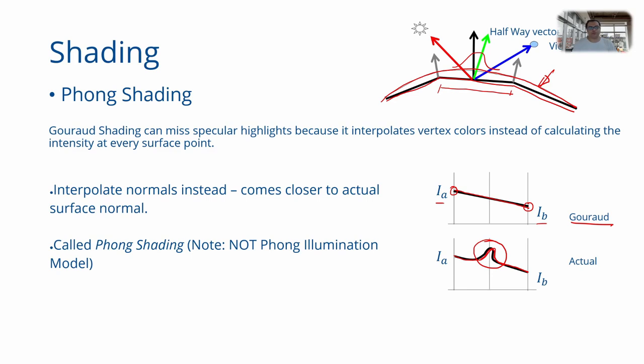One way around this problem is to reduce the size of your facets. But that causes the problem of too much geometry that has to pass through your pipeline and that will slow down your rendering. So what is the solution? The solution is to do Phong shading or per pixel shading.